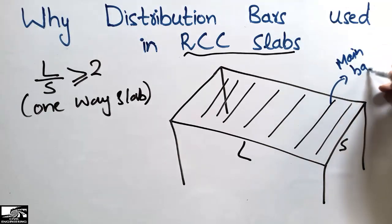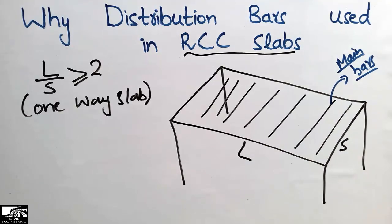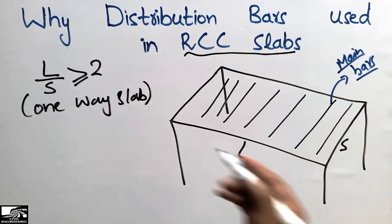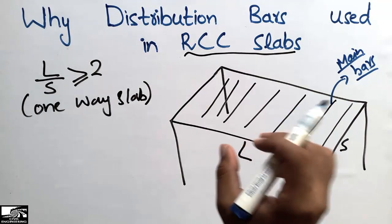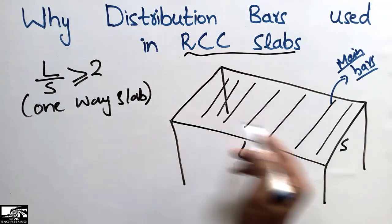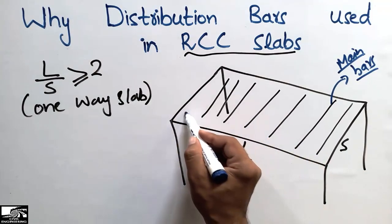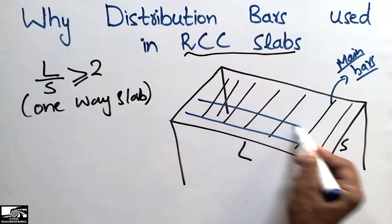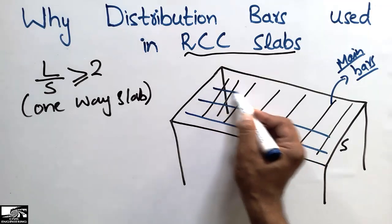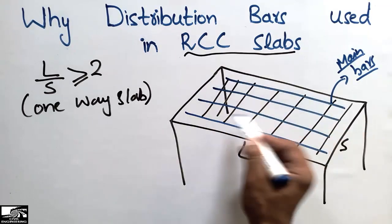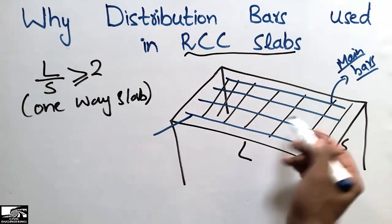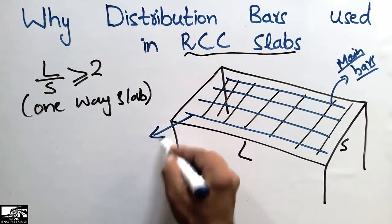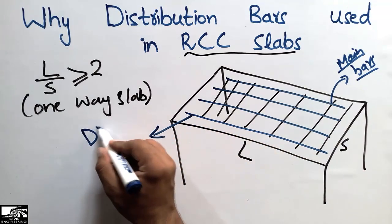Now there is not much load coming along the longer side, but we still place some reinforcement along the longer side with maximum spacing. These bars placed on top of the main bars are known as the distribution bars.